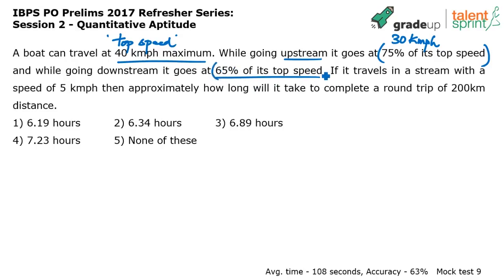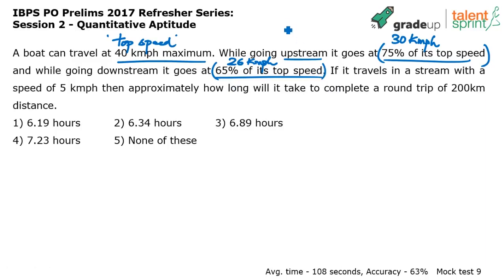65 percent of 40 is 26 kilometers per hour. So that's it — indirectly he has given us the speed of the boat when it goes upstream and the speed of the boat when it goes downstream.